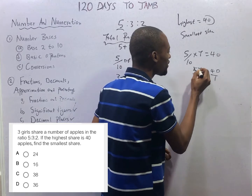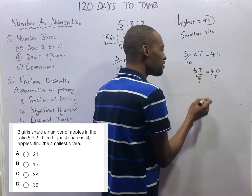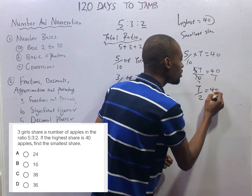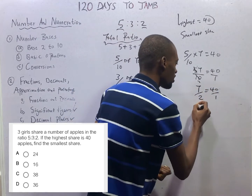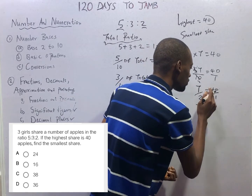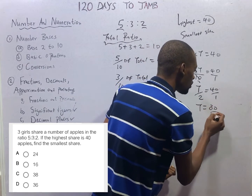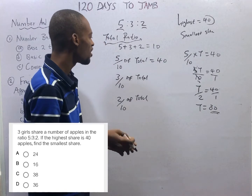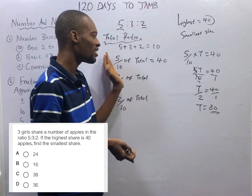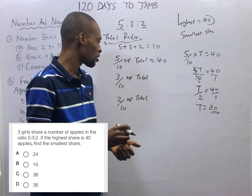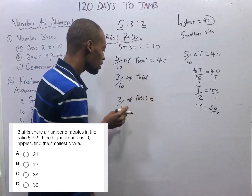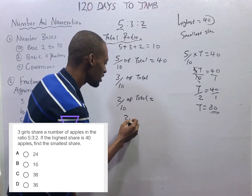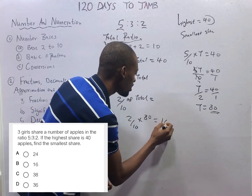For me, I would say 5 divided by 5 is 1, and 10 divided by 5 is 2. So T over 2 is equal to 40 over 1. Cross multiplying, T is equal to 80. So the total number of apples is 80. That is the reason the person with ratio 5 is getting 40. The person with ratio 2 will simply have 2 over 10 of 80, which is 16.